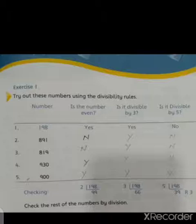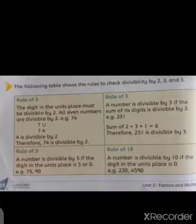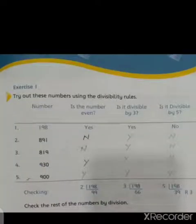This column is solved by the rule of 2. What is rule of 2 for class? The digit in the unit's place must be divisible by 2. All even numbers are divisible by 2. For class, we need to check if the number is even and divisible by 2. The unit place is 1, which is not even. It means this whole number is not divisible by 2. So we will write N in the column. N means no.